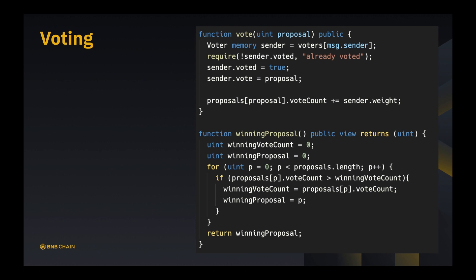Finally, it's the vote and winning proposal. So vote is easy and straightforward. We say voter memory sender is going to be voters[message.sender] and we require it hasn't voted yet, otherwise we say you already voted. Then we say voted is true, vote is proposal - so all the information is recorded accordingly - and we add up the vote count by sender.weight. So proposal here is ID again.